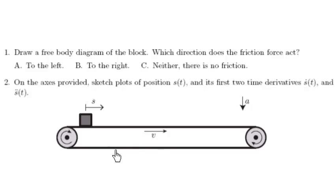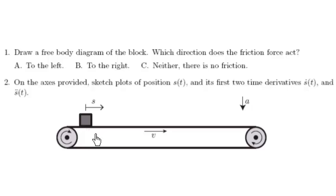In this problem we have a conveyor belt with rollers that are rotating, moving the top of the belt with a constant speed V. I'm going to place a block of ice onto the belt. The block of ice is slippery — not completely frictionless, but slippery. I'll put the block of ice on the belt; it's initially going to have zero speed. The block is going to slowly build up speed, and by the time it reaches point A, it will have gained speed matching the speed of the belt.